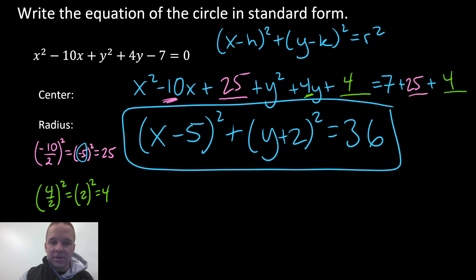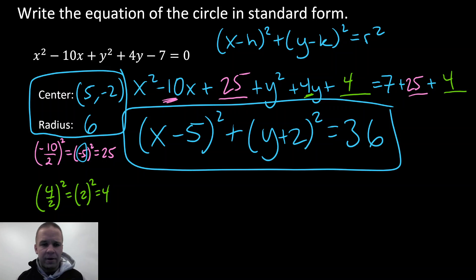Well, my center here, my center's gonna be five comma negative two, and my radius is just the square root of 36, which is six. So there we go, we've got our center, we've got our radius. It's a whole lot of work going on there, got a little messy, but hey, we handled it like champs.